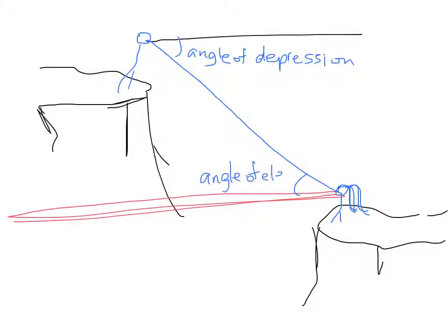And this should look familiar to you. We have two parallel lines and one line going through both. This is actually a transversal. And these are actually alternate interior angles. So the angle of depression for him is actually equal to the angle of elevation for her.